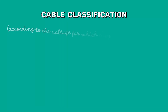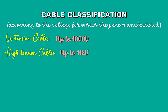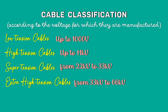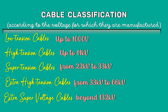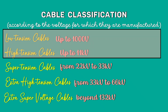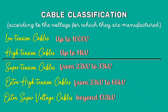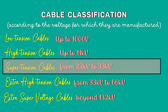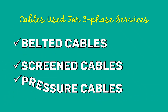The cables can be divided into five groups according to the voltage for which they are manufactured: low tension, high tension, super tension, extra high tension, and extra super voltage cables. Belted cables are used for voltages up to 11 kV, but in extraordinary cases their use may be extended up to 22 kV. Screened cables are meant for use up to 33 kV, but in particular cases their use may be extended to operating voltages up to 66 kV. Beyond 66 kV, pressure cables are used.